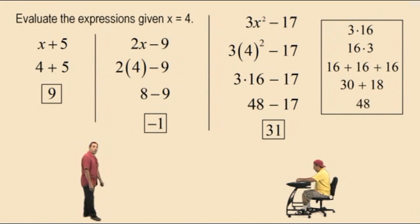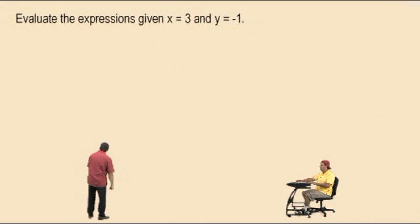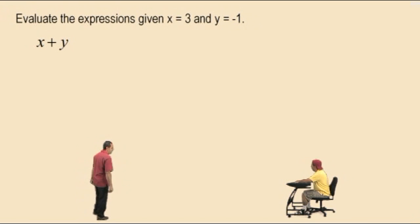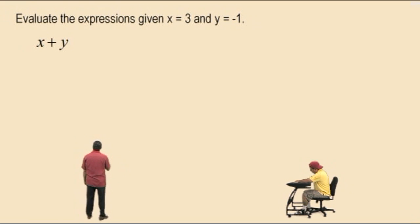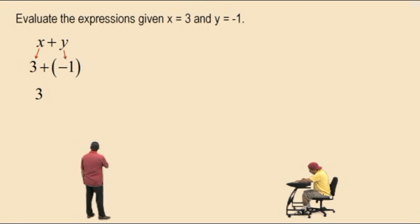Now let's do some more expressions, but with two variables. Evaluate the expressions given x equals 3 and y equals negative 1. Here's our first expression: x plus y, the sum of x and y. Just replace the x with 3 and the y with negative 1. We have adding a negative 1 — what happens when you add a negative number? Subtract the opposite. So it's 3 subtract 1, which is 2. Very nice.